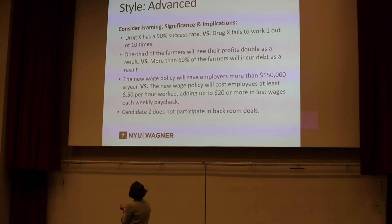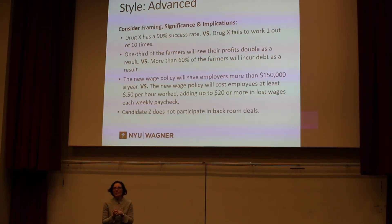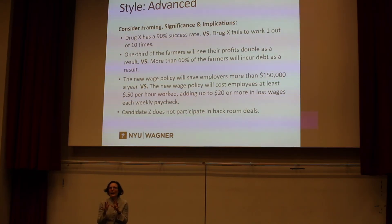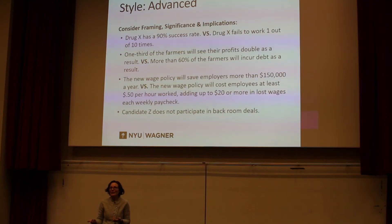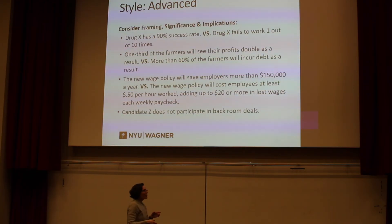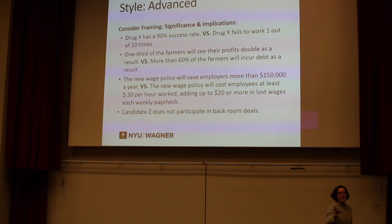This last example is actually from a flyer: 'Candidate Z does not participate in backroom deals.' Nobody in the local election was talking about backroom deals, but by sending this out it's almost like saying, 'We don't — we're not saying anybody else does, but we don't,' while actually implying the other candidate might. It's like throwing out a false accusation without actually making one. These are things to consider about how you shape your data and present your argument to support it or torpedo it.